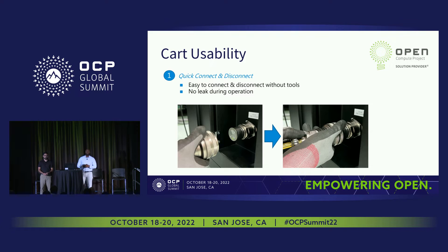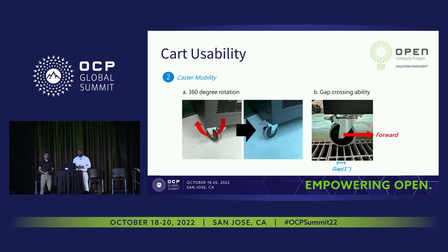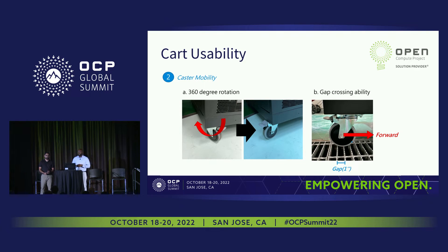In terms of usability, we wanted to make sure the cart was as easy to maneuver and use in the data center for technicians, since it serves such a critical function for servicing liquid cooling. Every system has quick connect and disconnects, which prevents leakage when connecting a hose and makes it very easy for techs to connect the hoses. Regarding mobility, two of the casters are locked and fixed in place, and two have a full 360-degree rotation, allowing for easier turning through data center halls, especially for tight 90-degree turns. The cart was also designed to overcome at least a one-inch gap so it wouldn't get stuck during movement.